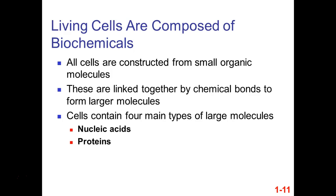Proteins are made up of repeating subunits called amino acids. Carbohydrates, sometimes referred to as sugars — on food labels they list sugars and carbohydrates. When they say carbohydrates, they're usually talking about multiple sugars hooked together, like starch. How do we store glucose in our bodies? Your liver stores it as glycogen.